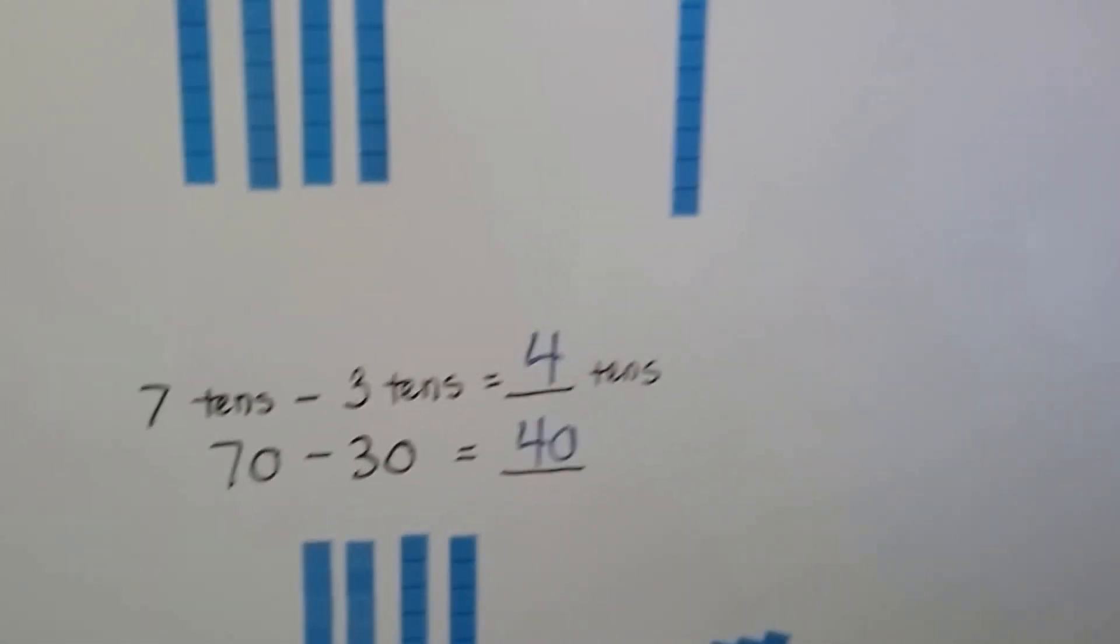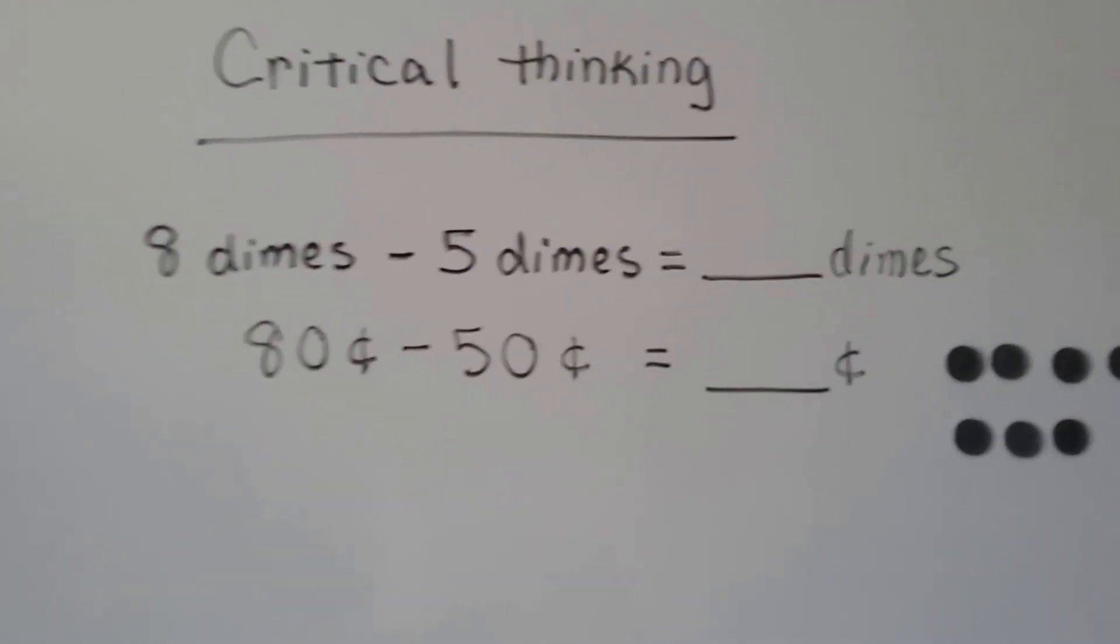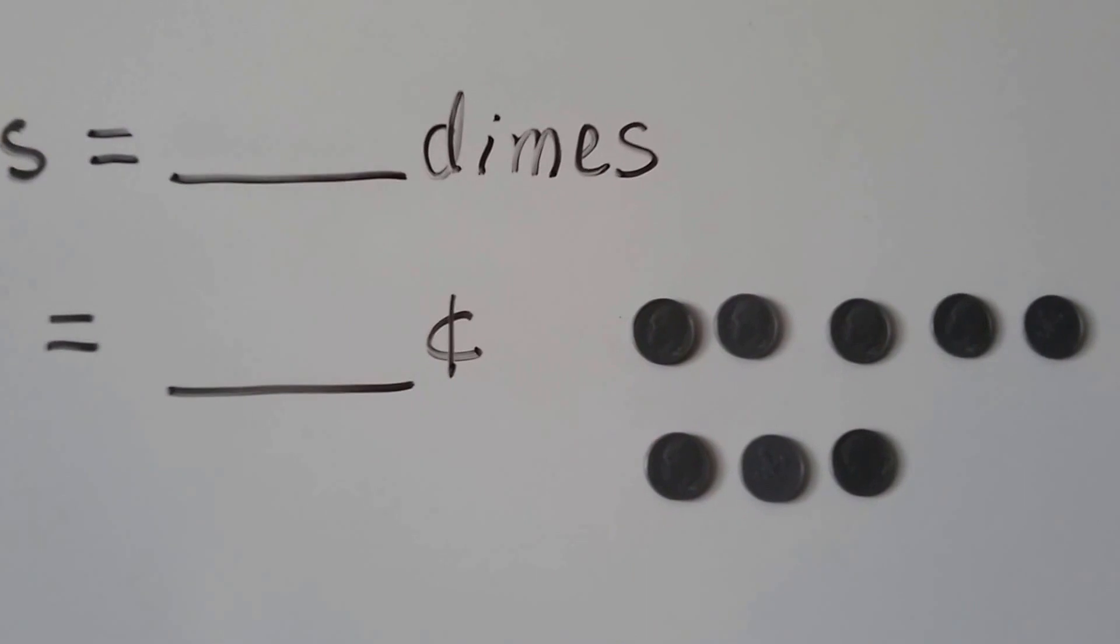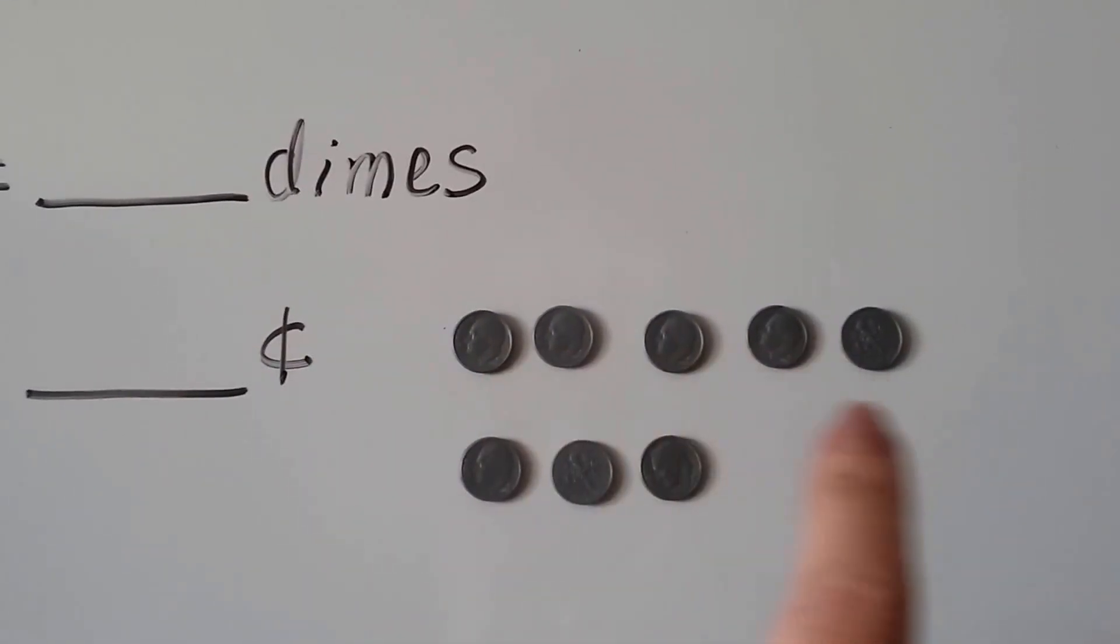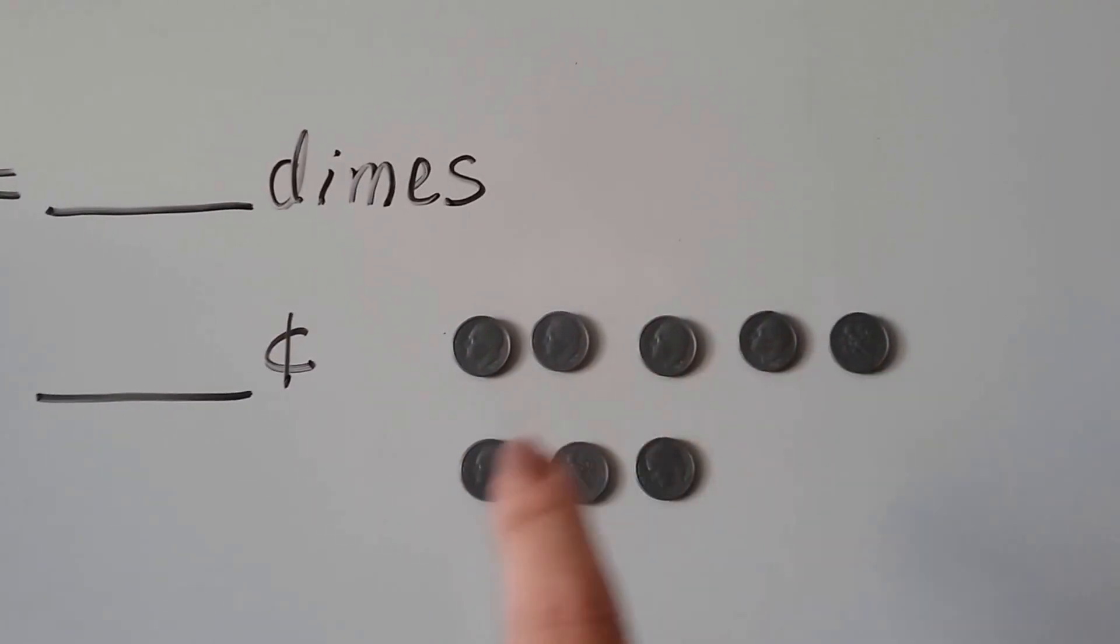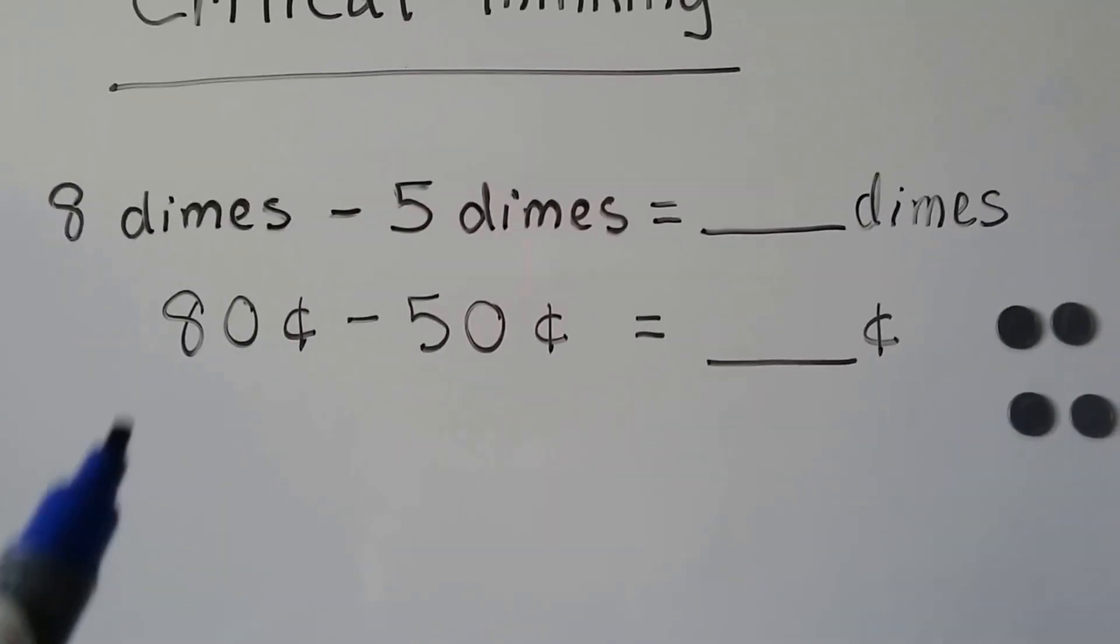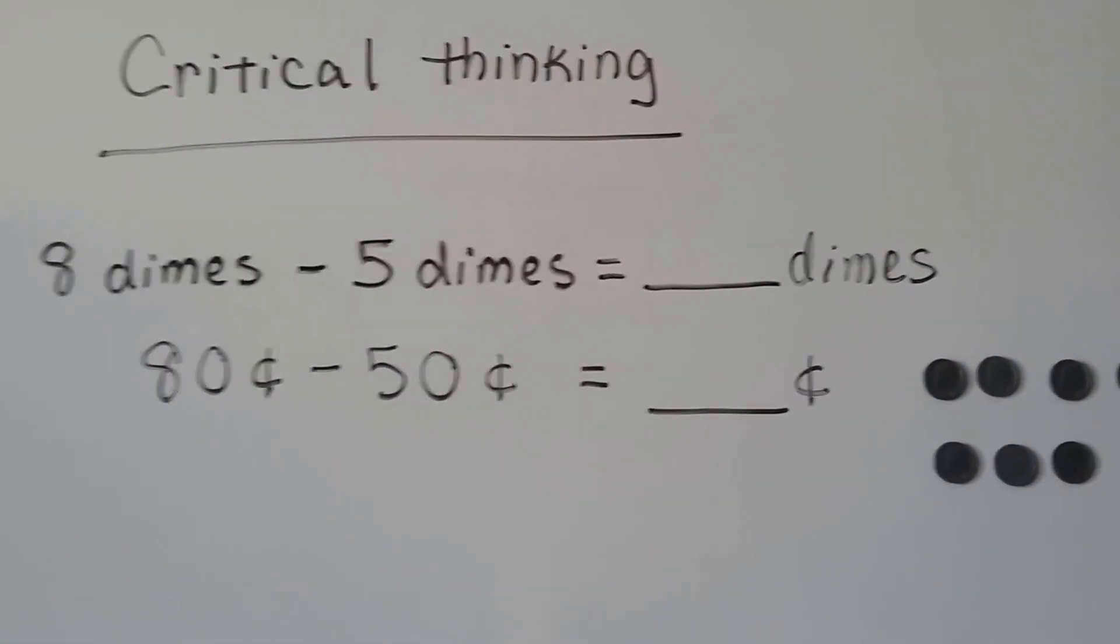Let's try some critical thinking. Do you remember from chapter four when we were working with dimes and money? Remember, each dime is ten cents. If each of these is ten cents, that means we have five, six, seven, eight tens. Eight dimes minus five dimes would be how many dimes?